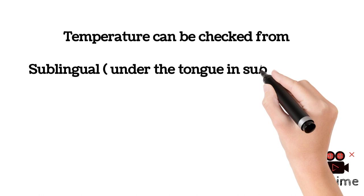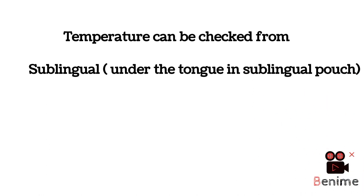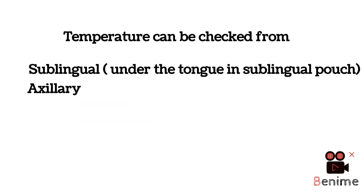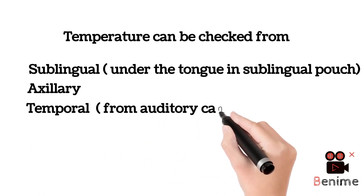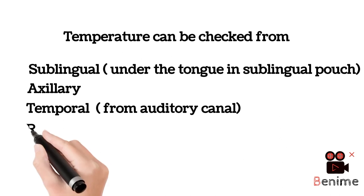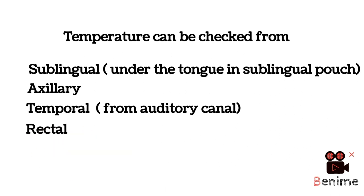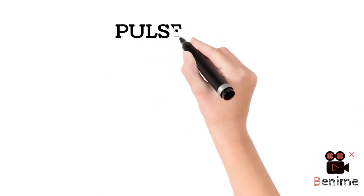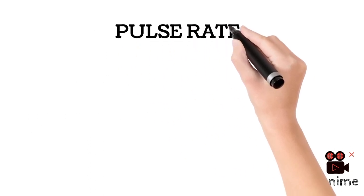1. Sublingual — by placing the thermometer under the tongue in the sublingual pouch. 2. Axillary — by placing the thermometer in your armpit; this site is mostly used in healthcare settings. 3. Temporal — can measure the temperature from the auditory canal. 4. Rectal — this site gives the most accurate temperature.